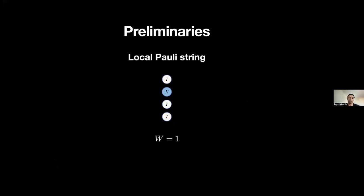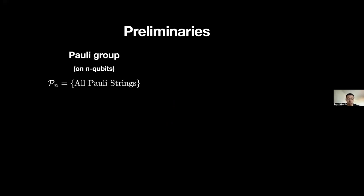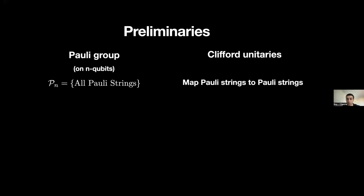The reason this is convenient is because it helps us define the Pauli weight — the number of non-identity Pauli operators in a string, or more intuitively, the number of blue dots. For example, if we only have three blue dots in our string, our Pauli weight is just three. Later on when we introduce scrambling, we'll be working a lot with local Pauli strings, which are strings with just one blue dot. We can also define the Pauli group on n qubits as the set of all possible Pauli strings.